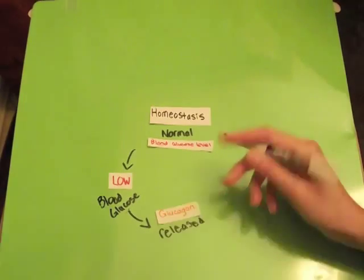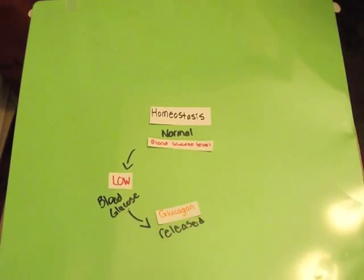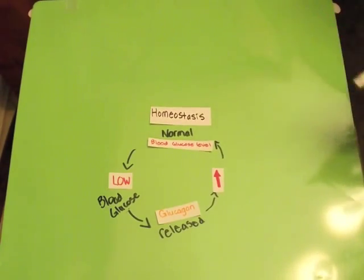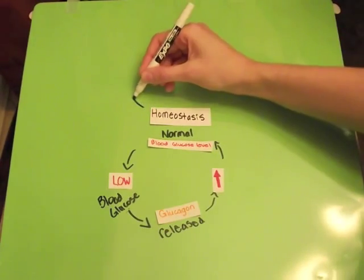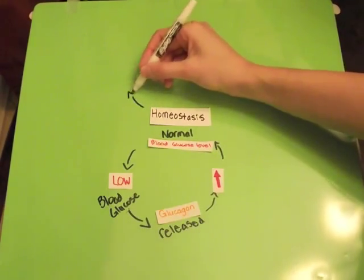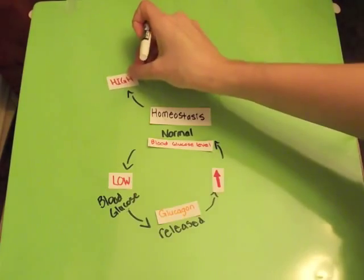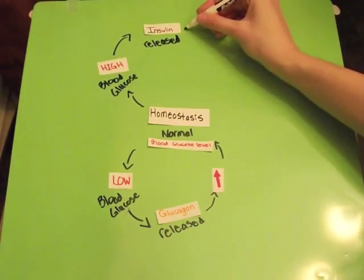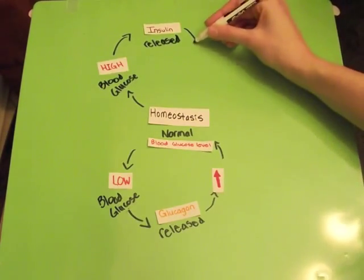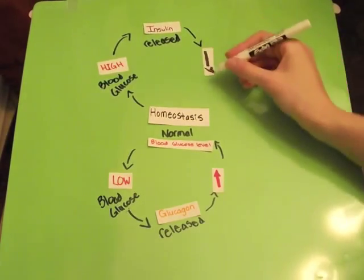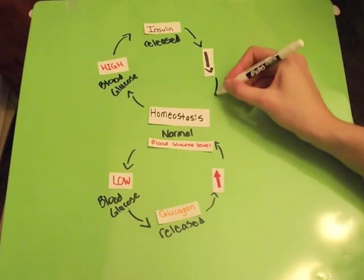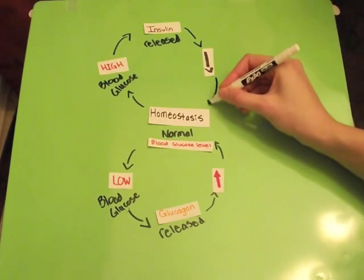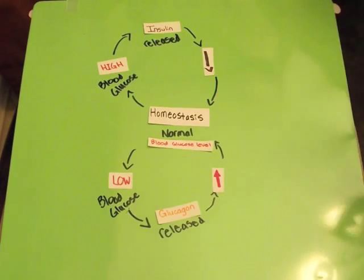When levels fall below normal, glucagon is released into the blood and acts to raise and restore normal levels. When levels are too high, insulin is released and functionally lowers the blood glucose. Once homeostasis is achieved, the hormone is no longer secreted.